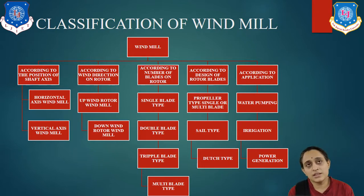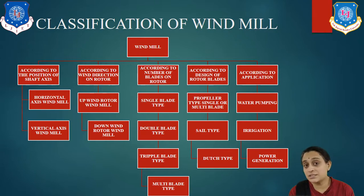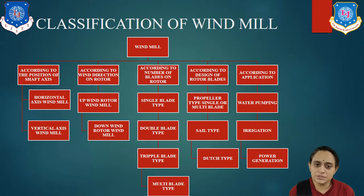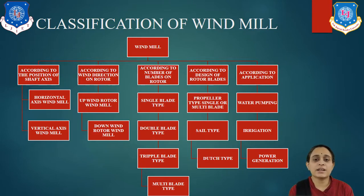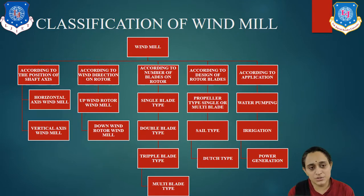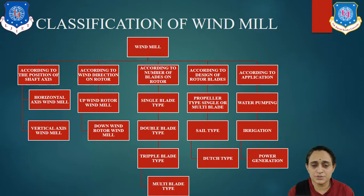According to the design of rotor blades, which is very important, the first type is the propeller type — single or multi blade. Then the sail type, where cloth material is used vertically. And the Dutch type. So there are three types according to blade design. And according to application: water pumping, irrigation, or power generation. There are multiple types of wind blades available.